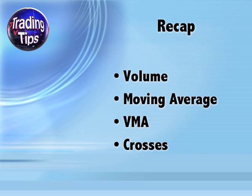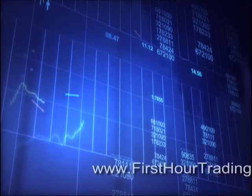To recap: volume is the number of shares traded over a particular period of time — it's a good indicator of the validity of a sudden price move. Moving average is a rolling average that smooths out volatility and helps you see trends better. VMA, or volume moving average, is what you get when you put the two together — this helps you view real volume trends more easily. Finally, you can look for VMA crosses by using short and long-term VMAs on the same chart. We hope you've enjoyed this TradingTips.com video newsletter. Thanks for watching and good trading.